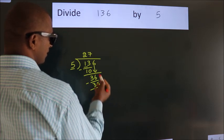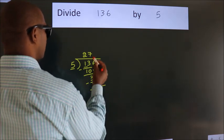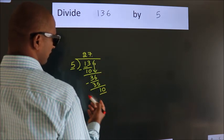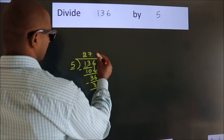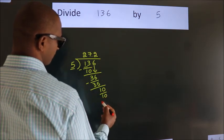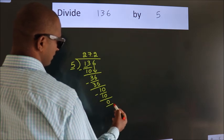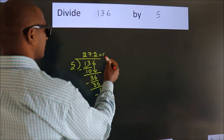After this, no more numbers to bring down. So what we do is we put a dot and take 0. So 10. When do we get 10 in the 5 table? 5 twos, 10. Now we subtract. We get 0. We got remainder 0, so this is our quotient.